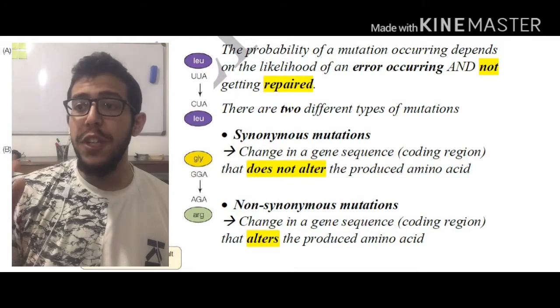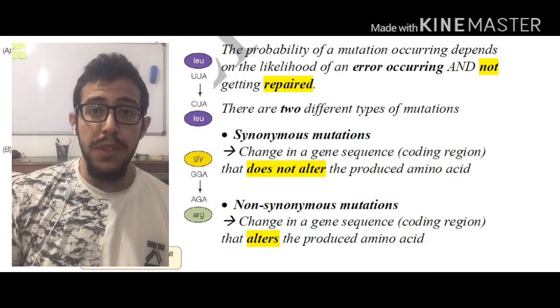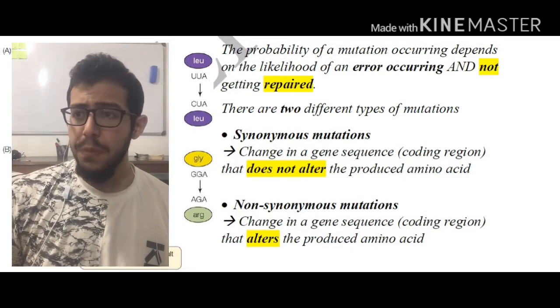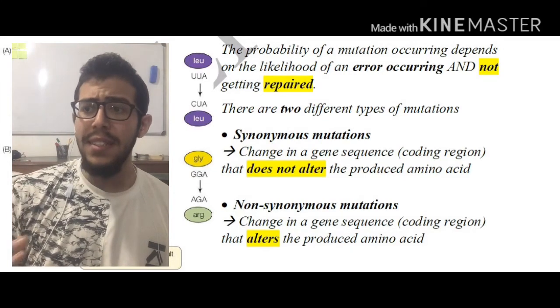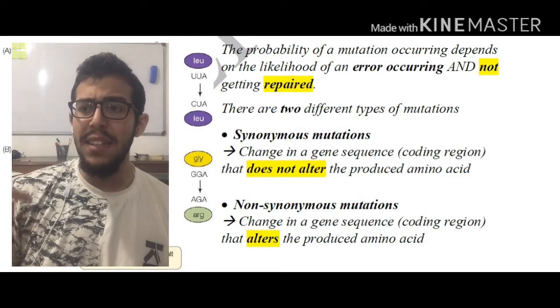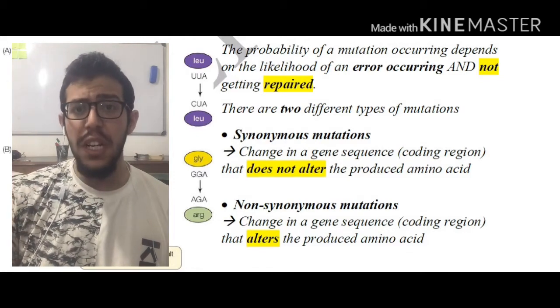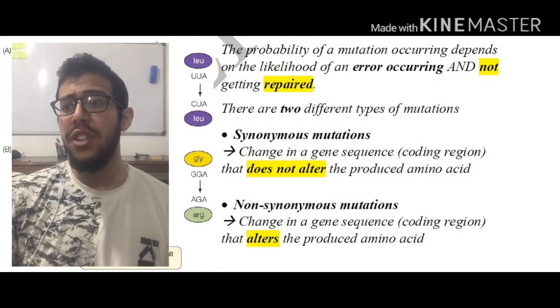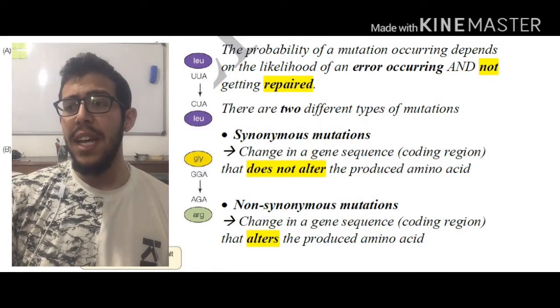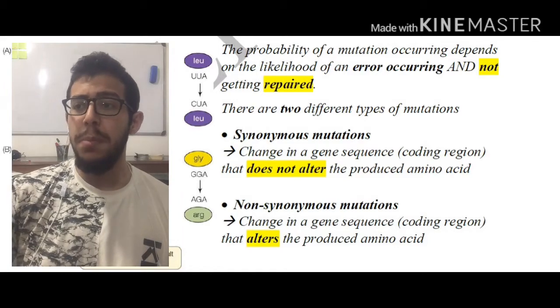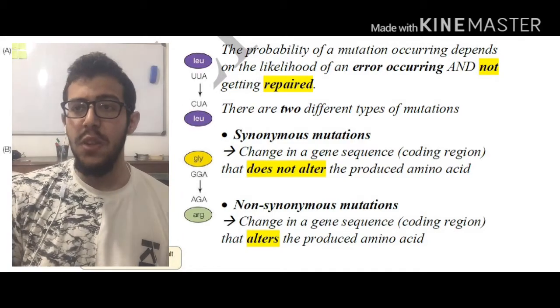Moving on to non-synonymous mutations, it simply entails that a change in a gene sequence — specifically also in a coding region — alters the produced amino acid.